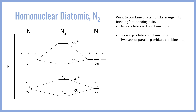The overlap of the parallel p orbitals is going to give us two pi bonding orbitals and two pi antibonding orbitals. Orbitals have to be conserved — if we put in two sets of p orbitals on each side, that's four, and that's going to give us two and two for a total of four molecular orbitals as well. We can then go ahead and start filling in those pi bonding orbitals and sigma bonding orbitals in energy from lowest to highest.